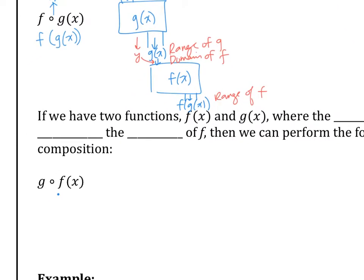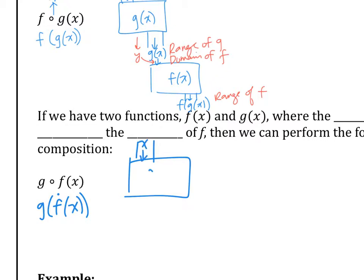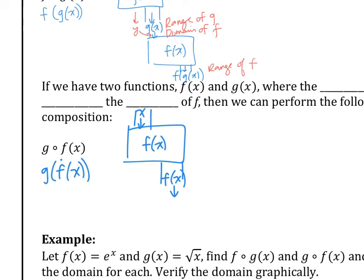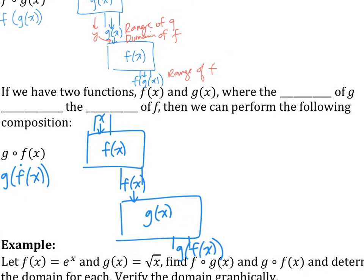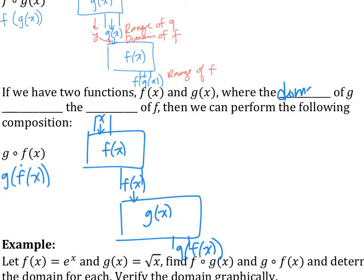Or we can do it the other way: g of f of x. That means x is going to go into f first, come out as f of x, which is going to go into the next function g, and then come out as g of f of x. When that happens, we're saying that the domain of g intersects the range of f. So the x values of g will be part of the y values of f.